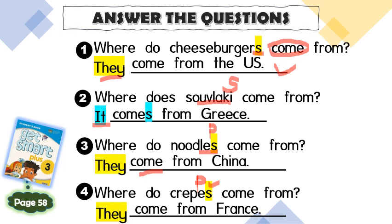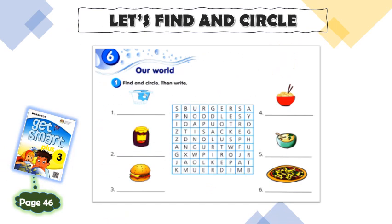It's done. Let's continue with your workbook. You can turn to page 46 to complete this task. You have to find the name of the food, circle them, and then write. It's easy — find, circle, and then write. Hopefully you can complete all six names of the foods by spelling all the names correctly.